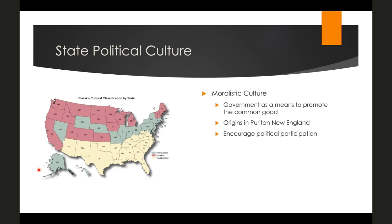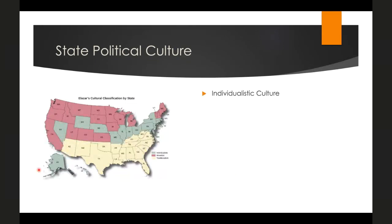Moralistic culture states are likely to have high levels of political participation and often make it easier to vote, with lower restrictions and same-day registration. California, for example, has localities experimenting with automatic vote-by-mail. These states often have more contested elections between the two political parties. Moralistic cultures, Elazar contends, prioritize meritocracy over party loyalty — you're more likely to see people vote for different party members in different elections in order to prioritize the best person for the job.